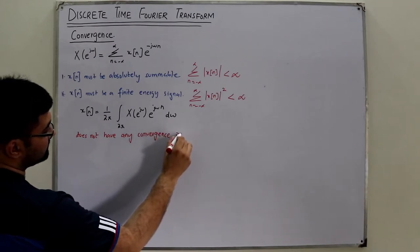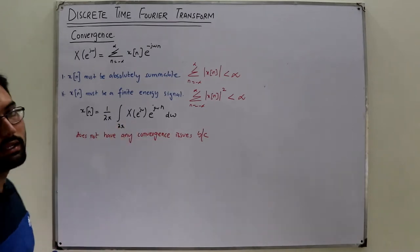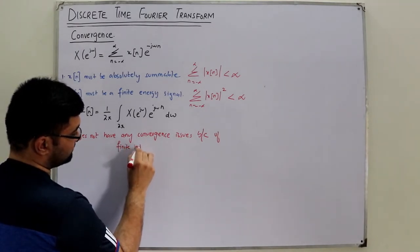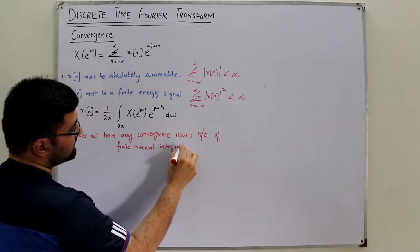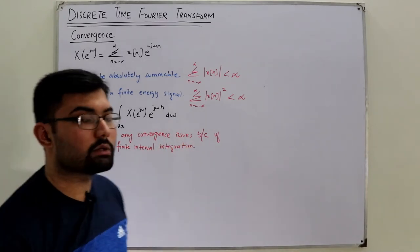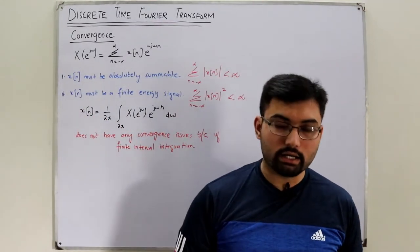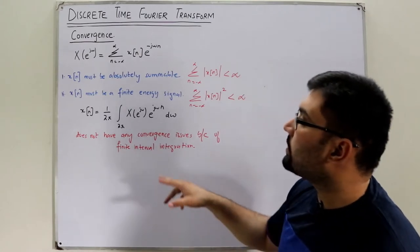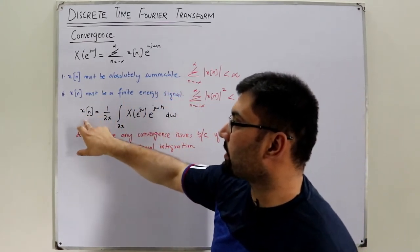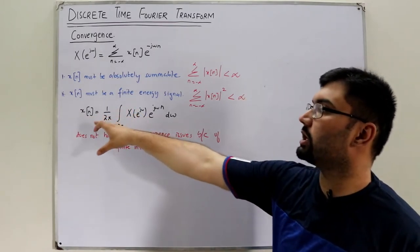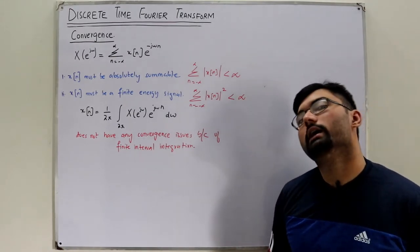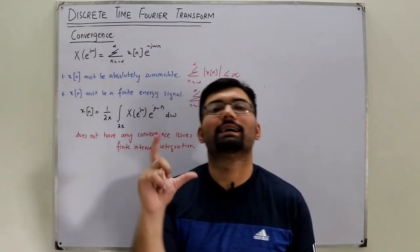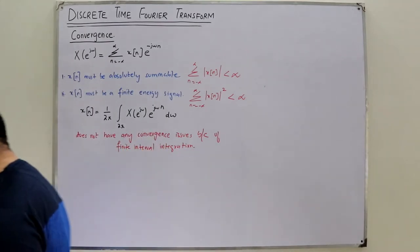Why will it always converge? Because of the finite interval integration. If you take the integration limits over an interval of 2-pi, you get the proper x of n. But if you take the interval less than 2-pi, the right-hand side would not converge properly to x of n — the result would not be exactly equal to the original signal. If you increase the interval beyond 2-pi, repetition starts, because the Fourier transform repeats itself due to its periodic nature.